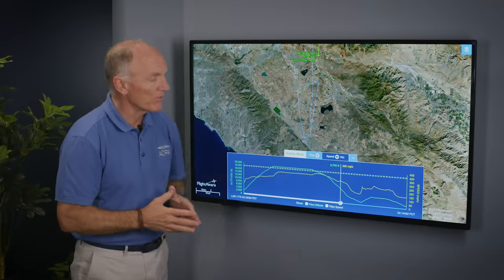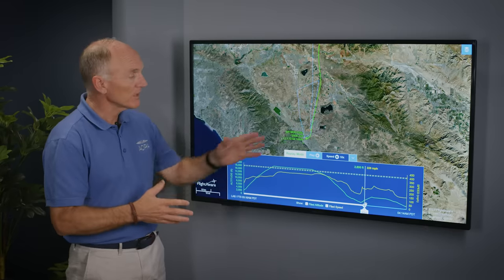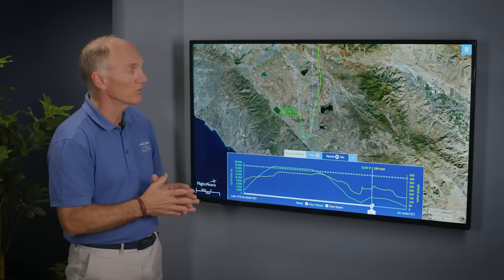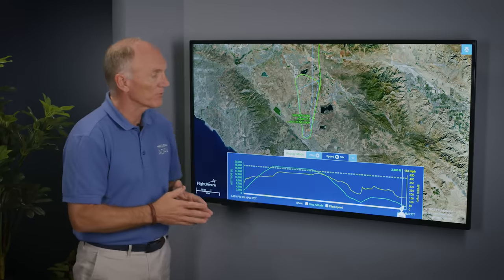From what we can see from the profiles on FlightAware, the first approach looked like a stable approach. The pilot flew down to minimums and reported going missed approach. He flew the published missed approach procedure and then came back around for a second approach. In the second approach, it looks very similar to the first approach, only he continues the descent all the way into the crash, about 500 feet short of the runway.